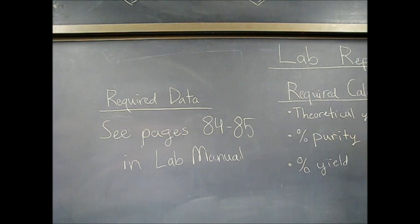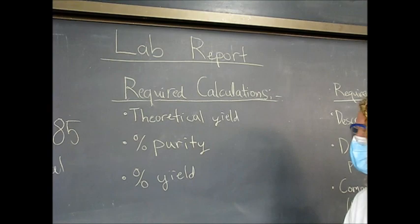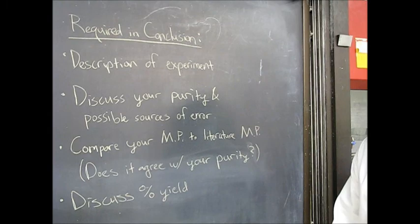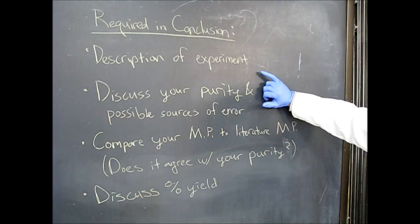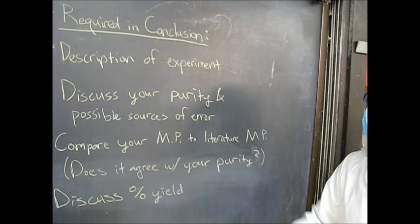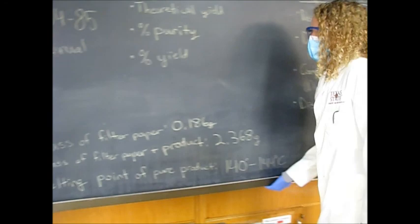So for your lab report, the data that you need will all be on pages 84 and 85 in your manual. Make sure you calculate your theoretical yield, your percent purity, which we'll be going over in the second video, and then your percent yield that'll be based off of your percent purity. And then in your conclusion, again, just make sure you kind of talk about the experiment, how it went, and describe it in general. Make sure you talk about your percent purity and what that means about possible sources of error. Make sure you talk about the melting point that we give you. Compare it to the literature melting point of both the product and salicylic acid. And then see if that makes sense with the purity that you calculate. And then also, of course, discuss your percent yield.